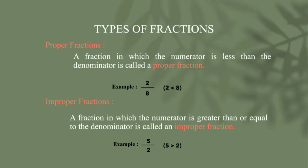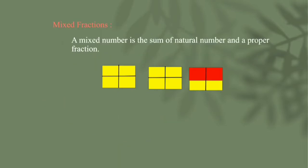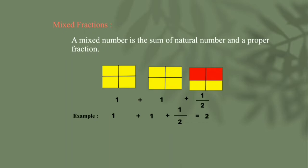The next one is mixed fraction. A mixed number is also called a mixed fraction. Look at 3 rectangles — the first and second rectangles are completely coloured, and half of the third rectangle is coloured. When added together, we get 2 and a half. So 1 plus 1 plus half equals 2 and a half. We can denote it as 2 and 1 by 2.